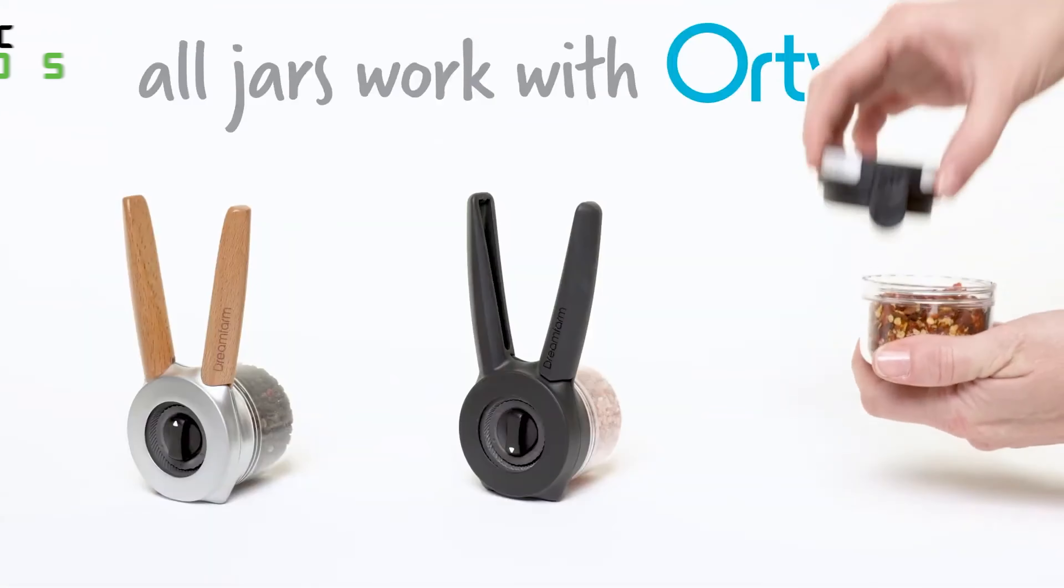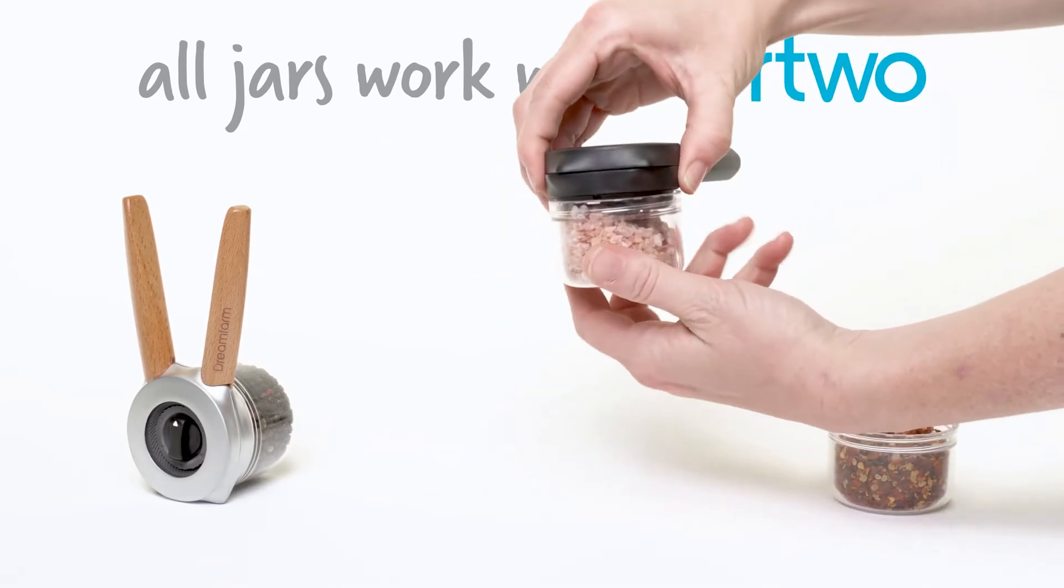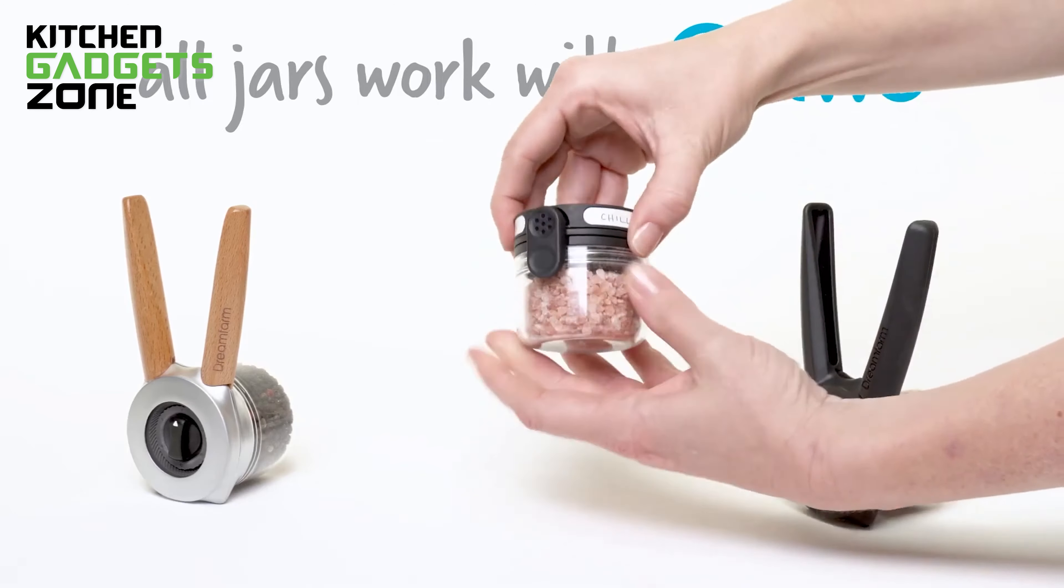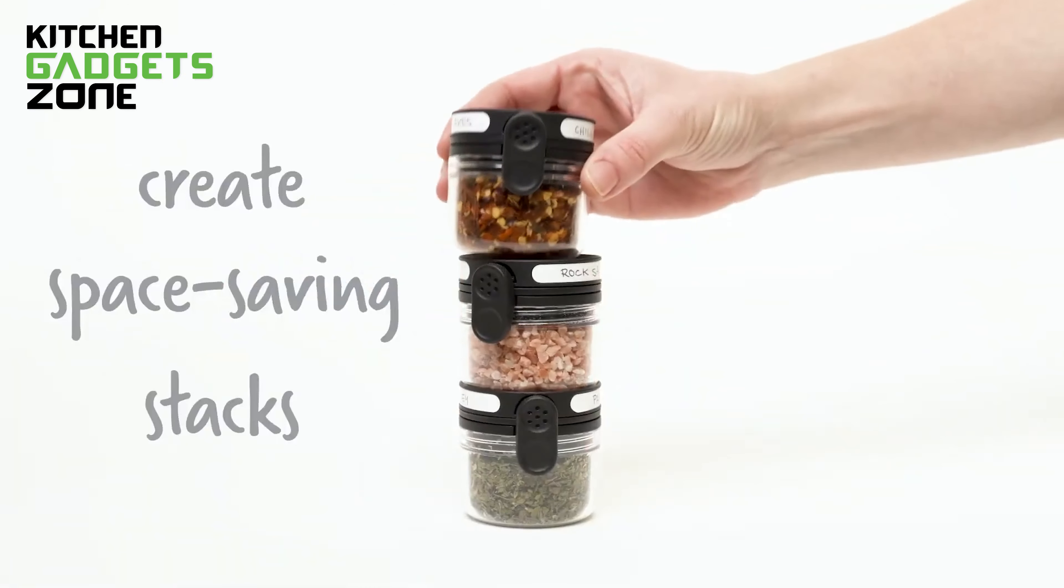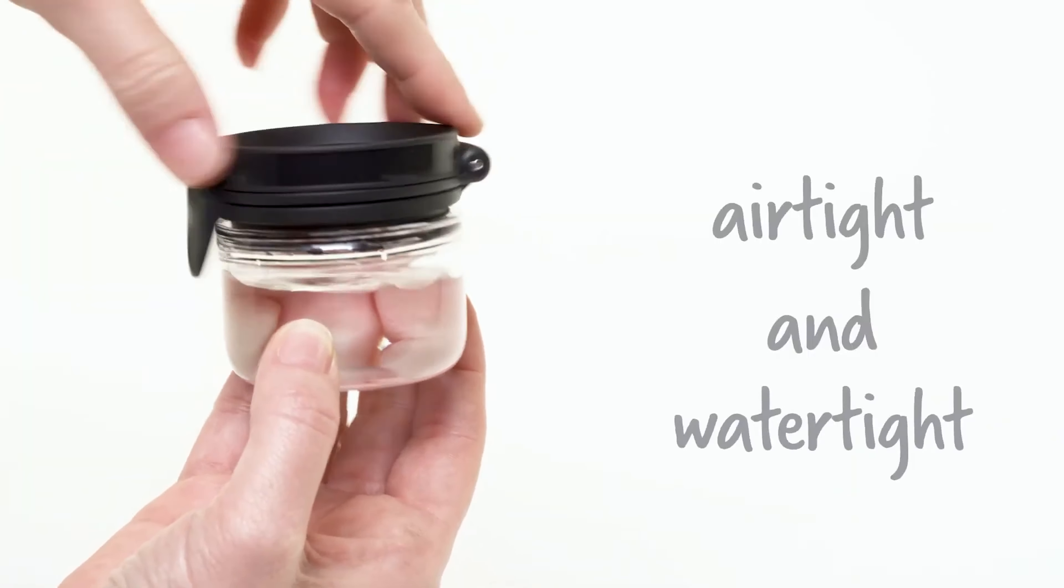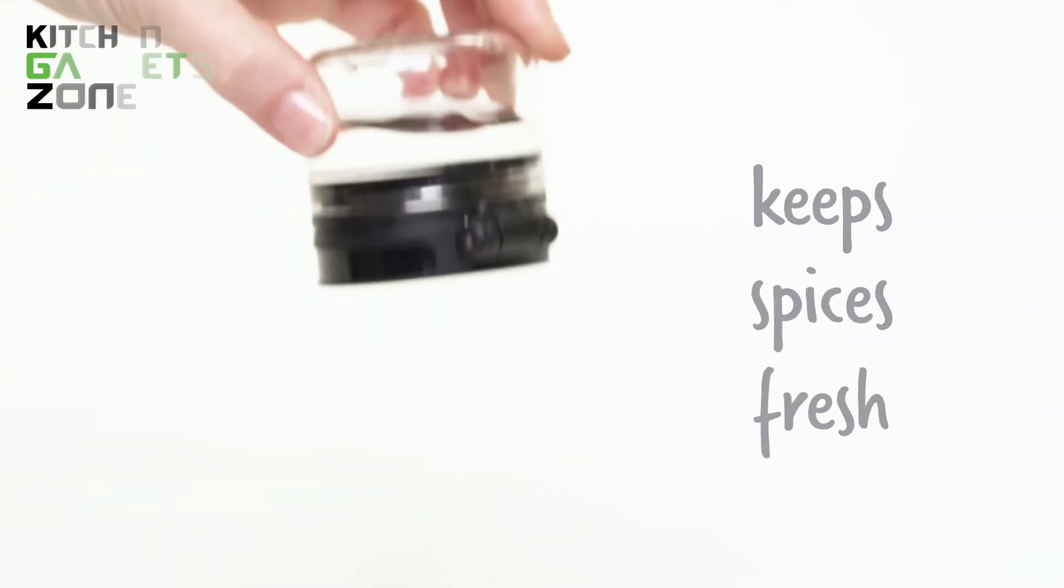The BPA-free plastic jar is compatible with the award-winning Ortwu and Ortwu light spice mills, making it a breeze to grind your own fresh spices. The Orlid lights nest in stacks for secure moving and easy viewing, so you can keep your spice collection organized and within reach.